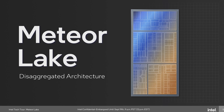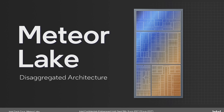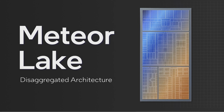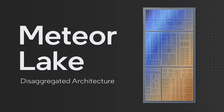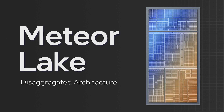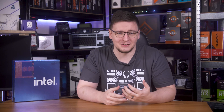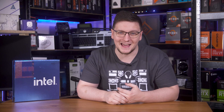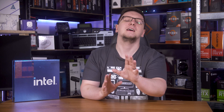Intel's Meteor Lake architecture has a pretty big shift in how the chips are made. Intel is employing the use of disaggregation of the chip design, which is the fanciest possible way to describe the fact that despite Intel actively mocking AMD for using 'glued together dies' in 2017, they're now copying AMD with chiplet — sorry — tiled CPU designs.